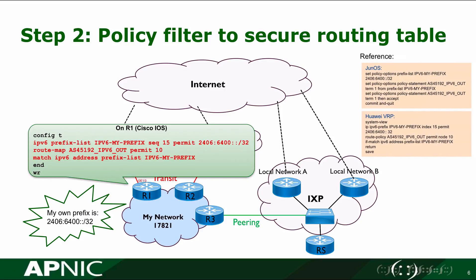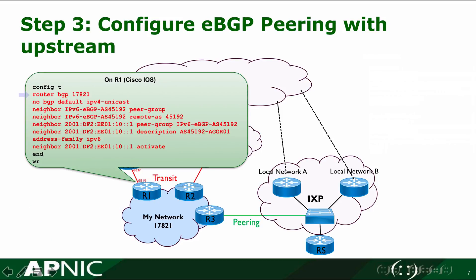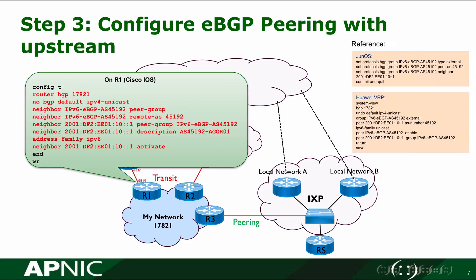Similar configuration for Juniper and Huawei platforms is shown for reference. In Step 3, we configure our eBGP peering with the upstream. In the BGP view, we put 'no BGP default IPv4 unicast' because we are configuring IPv6 and don't want IPv4 to be the default. We create the peer group with the remote AS number, configure the peering IP of the remote router using the directly connected interface as recommended, add a description for this neighbor, then get into the IPv6 address family and activate the peer. Configuration for Juniper and Huawei is shown as reference.